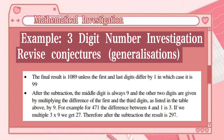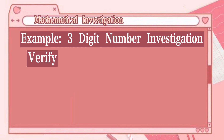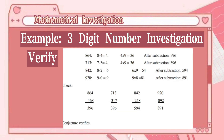After the subtraction, the middle digit is always 9 and the other two digits are given by multiplying the difference of the first and third digits by 9. For example, for 471: the difference between 4 and 1 is 3; multiply 3 by 9 to get 27, so after subtraction the result is 297. The important conjecture to verify is the second one, done by choosing numbers that have a digit difference of 4, 6, or 9, as there are none of those in the data gathered yet.